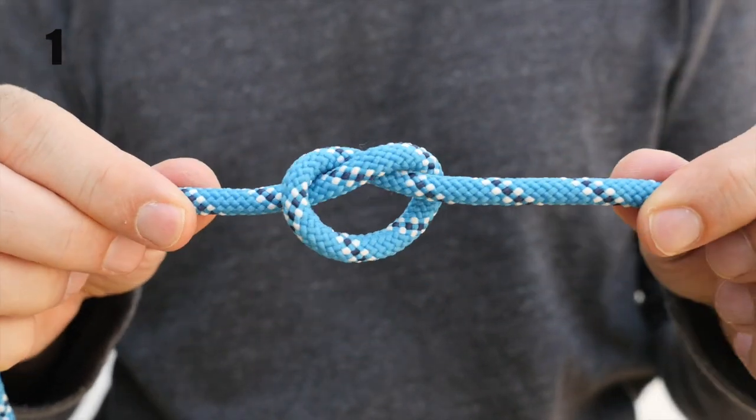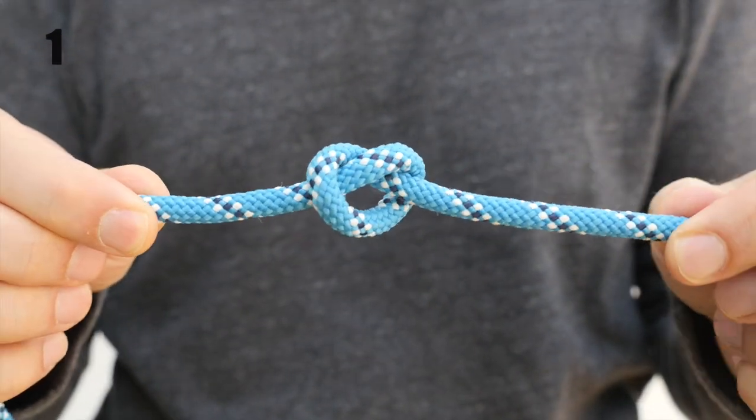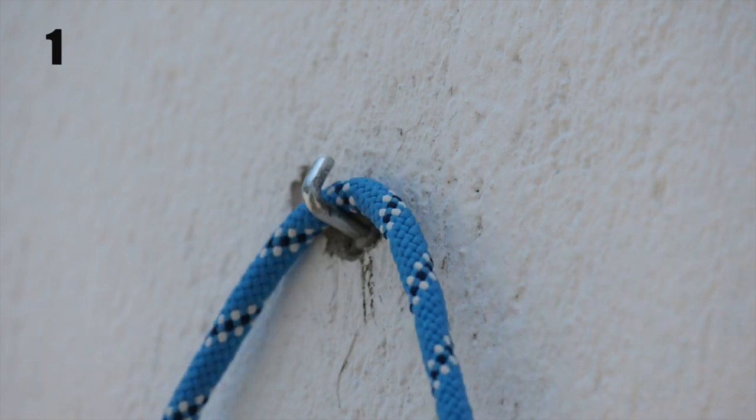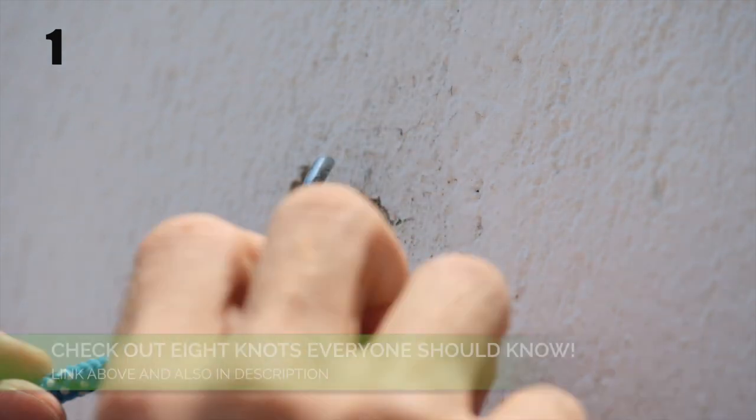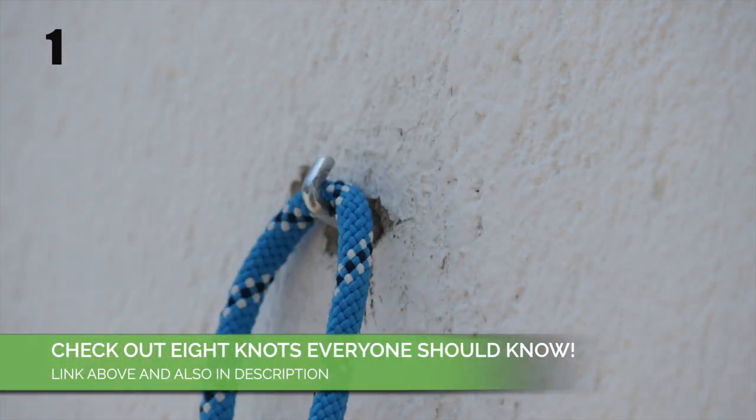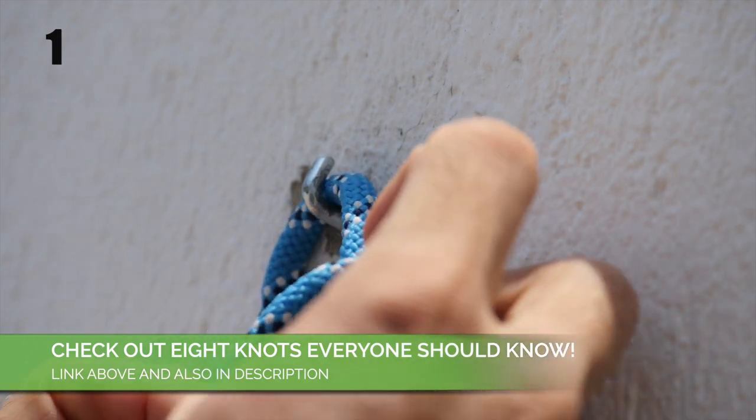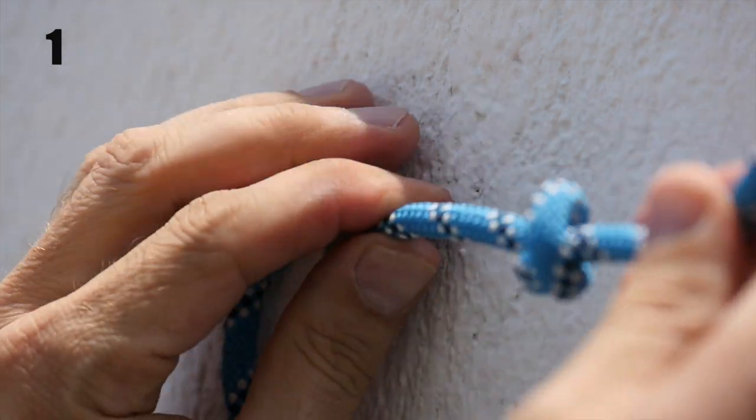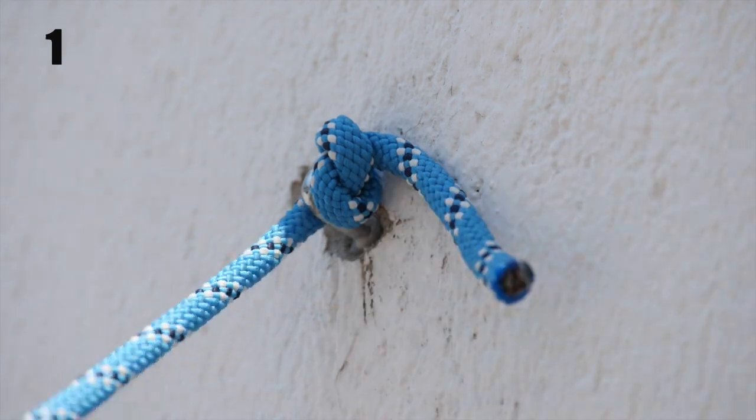A stopper knot is a knot that's used to prevent a rope from sliding through an object, a device, or slipping through another knot. By tying an easy overhand knot you can prevent the rope from slipping through. We're going to have another look at the overhand knot as a stopper knot in a moment.